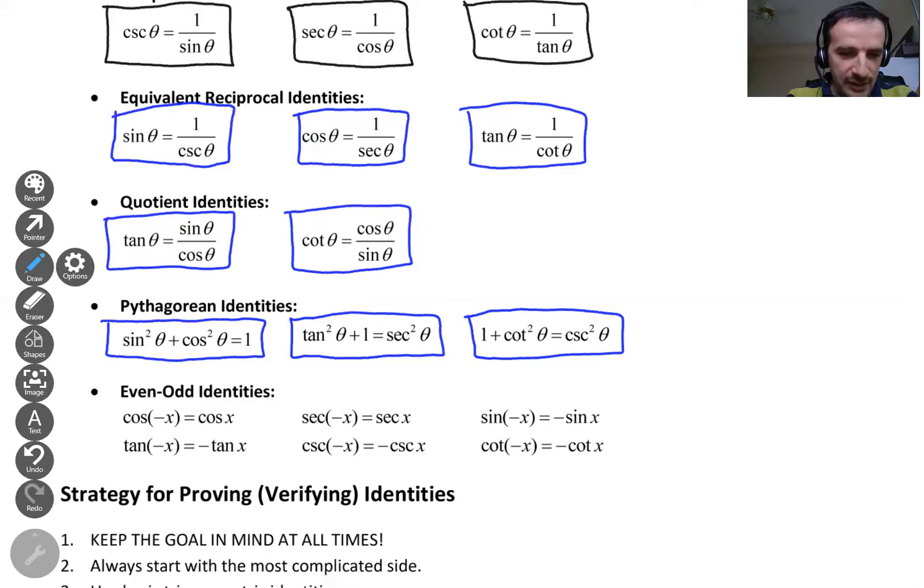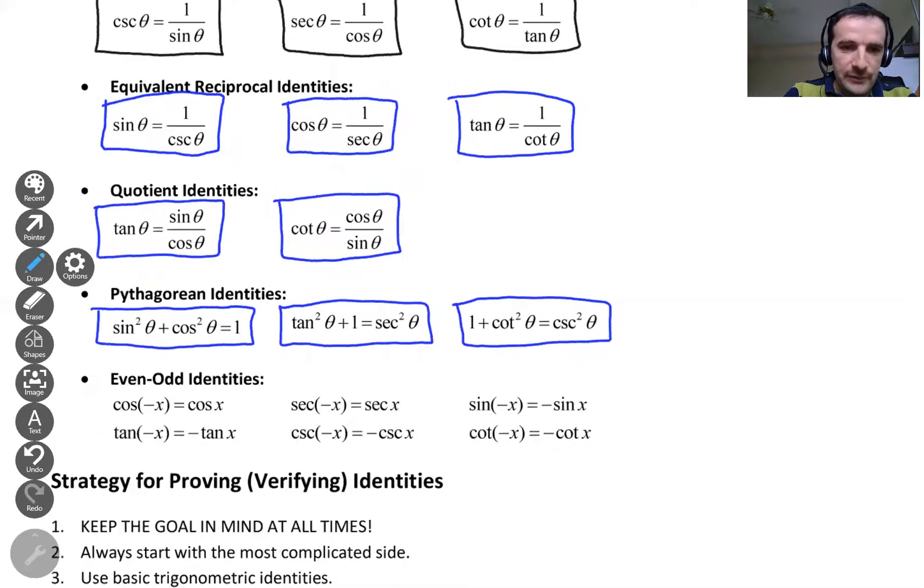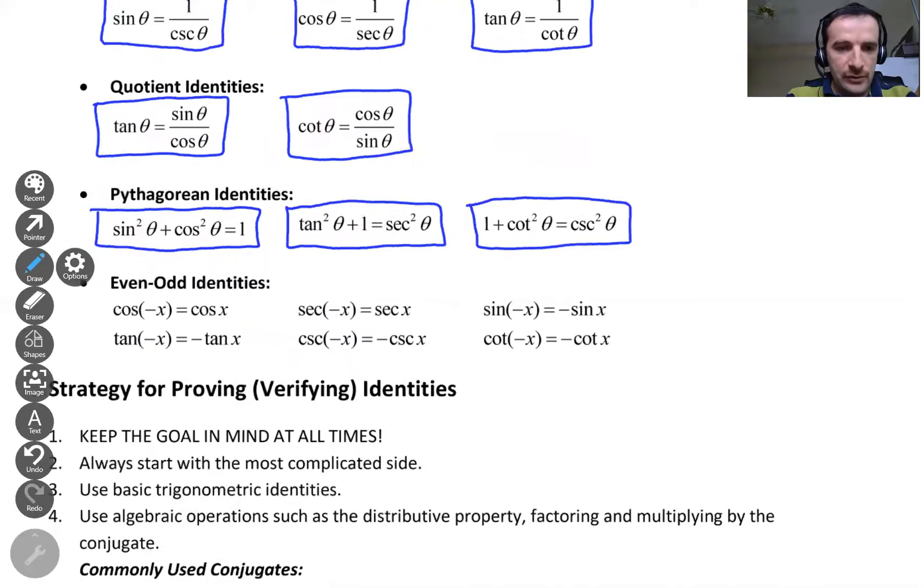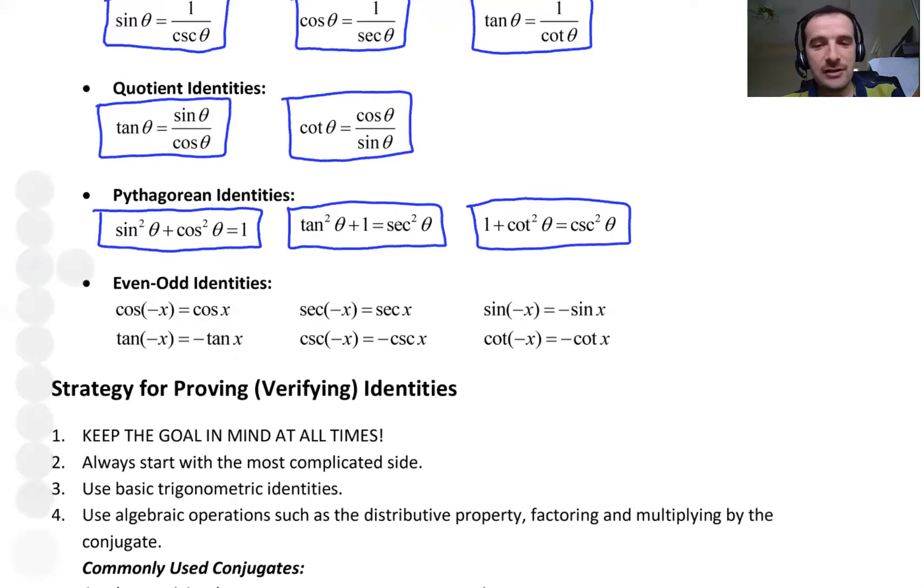And remember, we have some even odd situations for trigonometric functions, right? And you remember, we were using an analogy for that, being hungry or not. And the only hungry function, actually there are two functions hungry, which is cosine and secant, right? Secant is actually 1 over cosine. That's why it's also hungry. Hungry means they are going to eat minus sign, right? So cosine minus x is equal to cosine x.